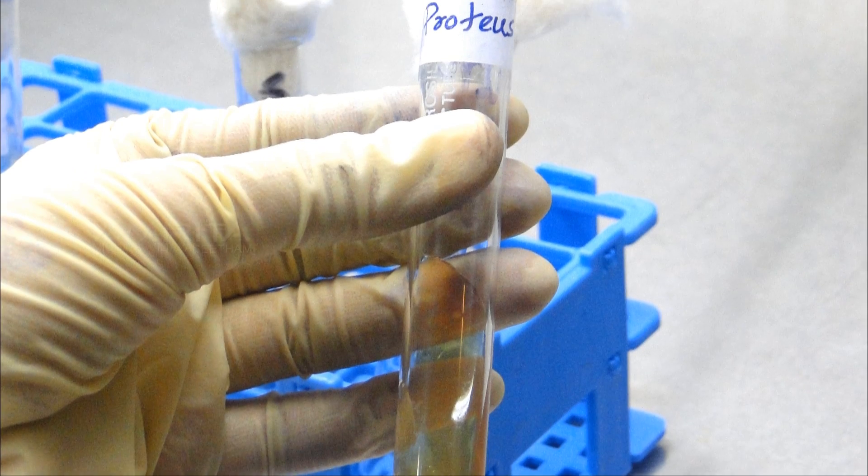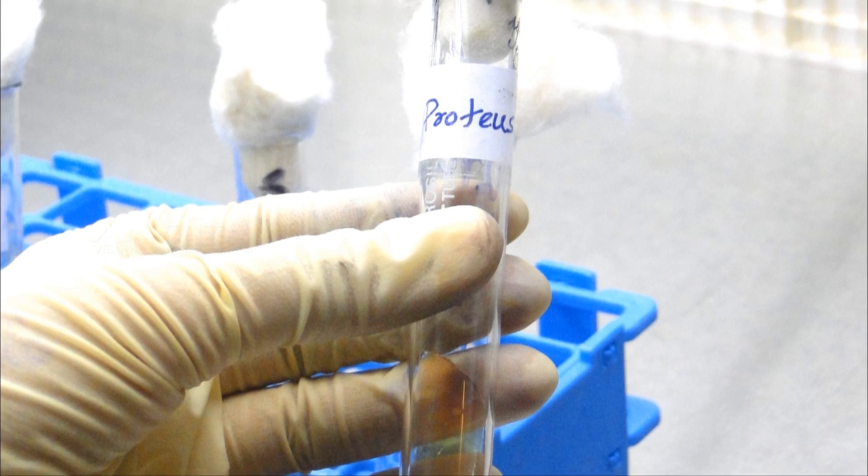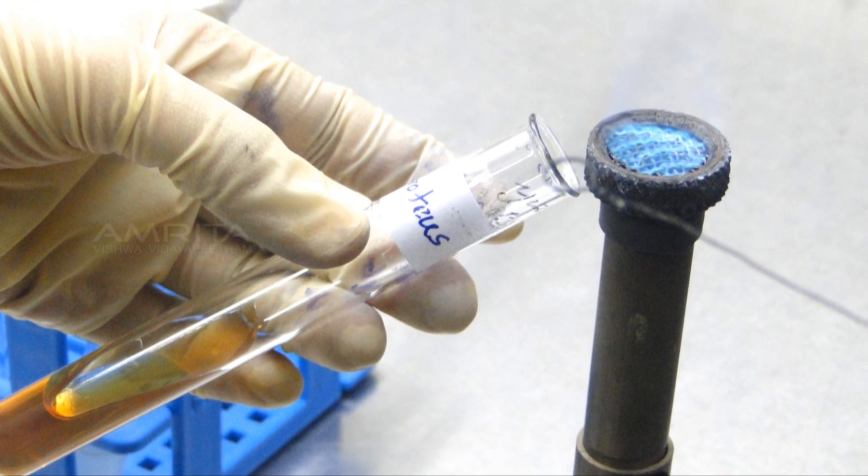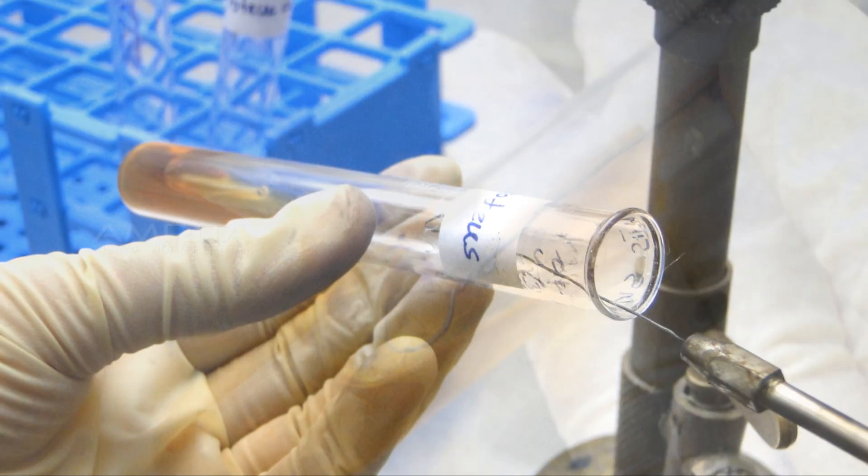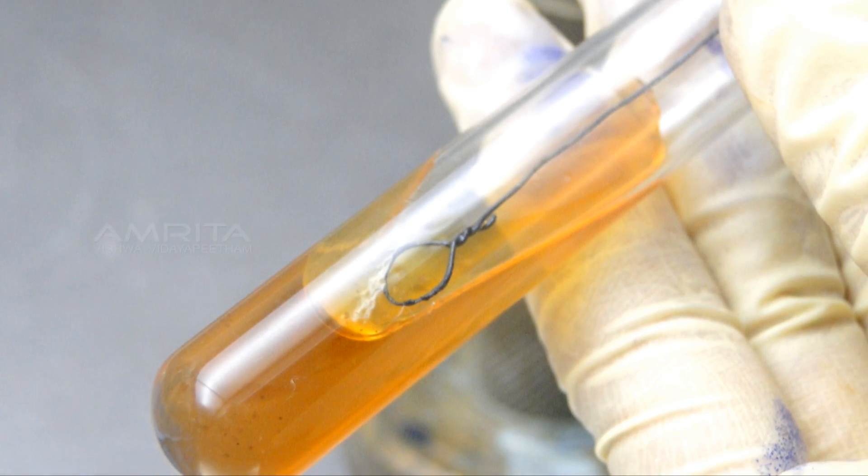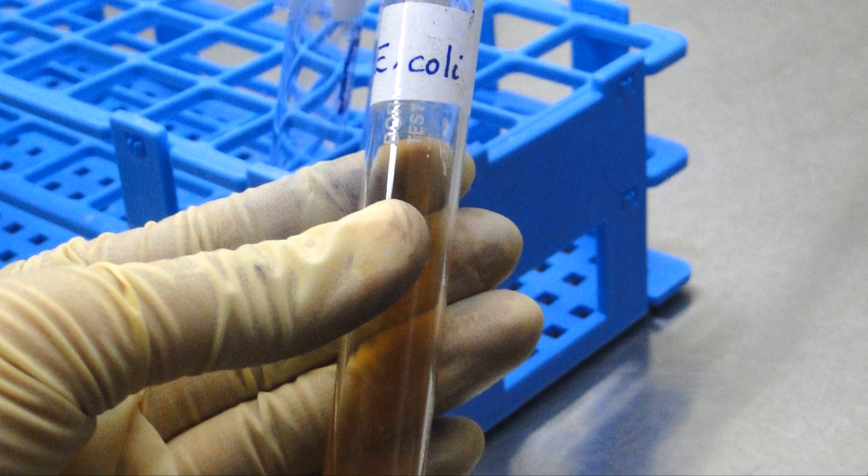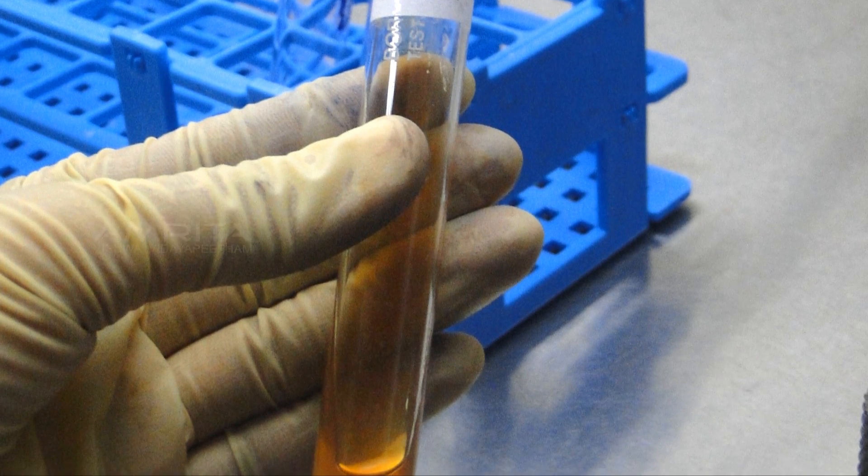Take a sterile urease slant tube from the rack, remove the cap, and flame the neck of the tube. Insert the inoculation loop and streak the slanted surface of the tube in a zigzag manner. Again, flame the neck of the urease tube, cap it back, and place it in the test tube rack.